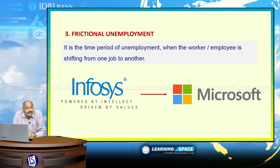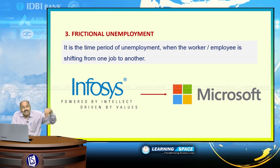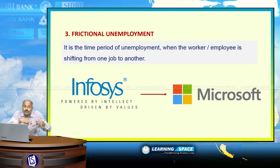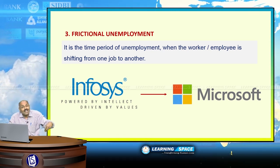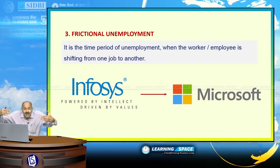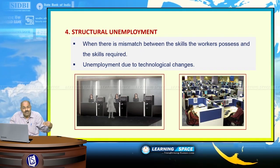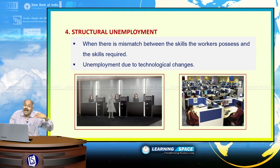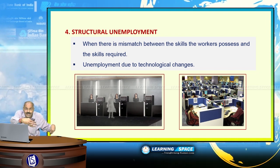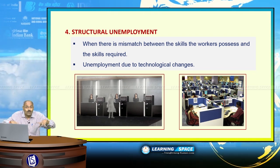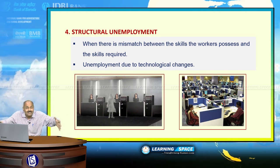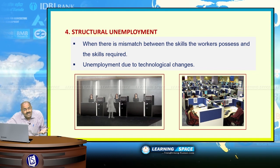The third type is frictional unemployment — the period of unemployment when a worker is shifting from one job to another. For example, if an Infosys employee is looking for a job at Microsoft or Google, leaves Infosys, and is in search of a new job, the intervening period is called frictional unemployment. The fourth type is structural unemployment — when there is a mismatch between the skills workers possess and the skills required. 90% of graduates coming out of colleges do not possess required skills and are unable to get jobs.